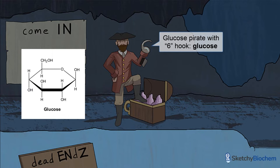Also notice he's got a gnarly six hook — that's to mark carbon number six. If you look real close, you'll notice the battery slot right beneath. This is going to be important in the very next step, but for now just keep in mind that this glucose pirate's hook arm has an empty battery slot.